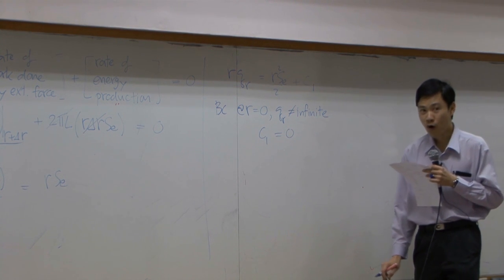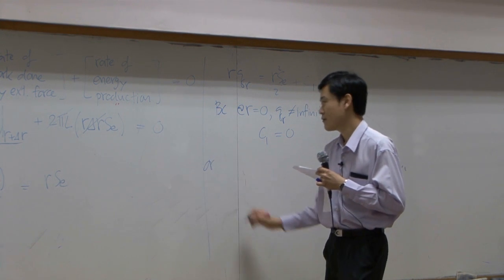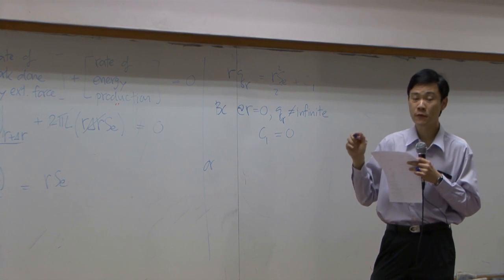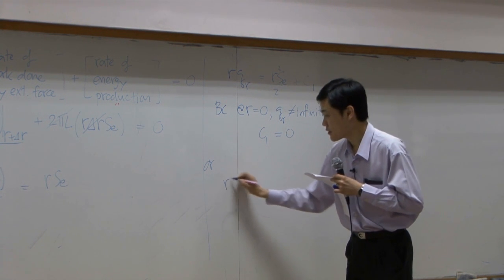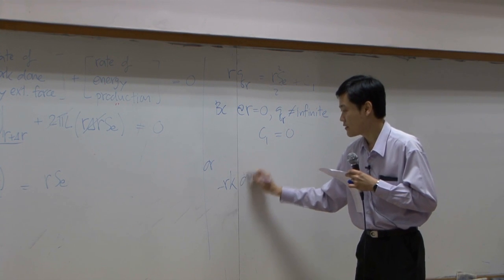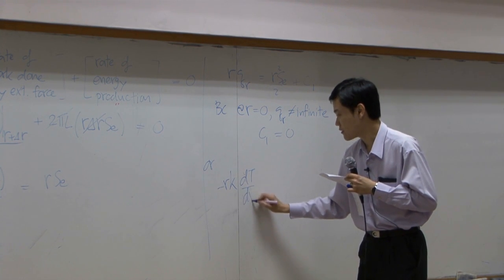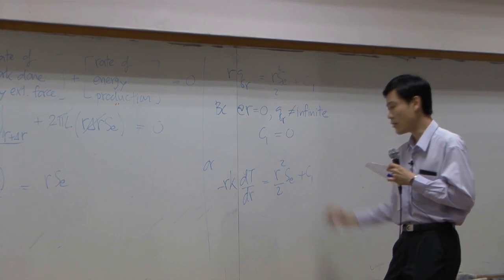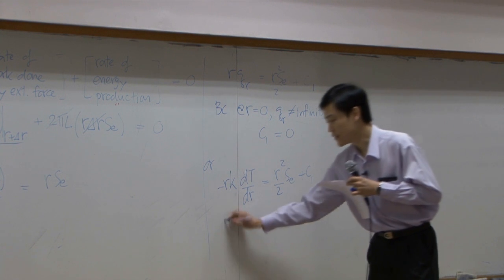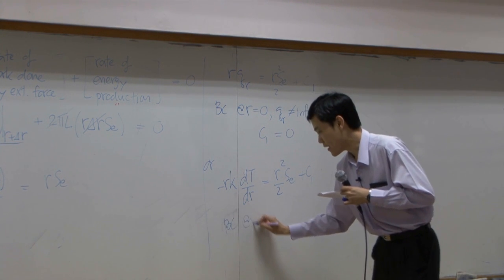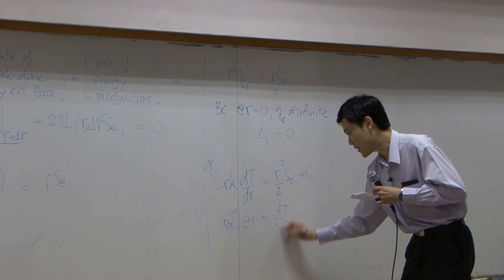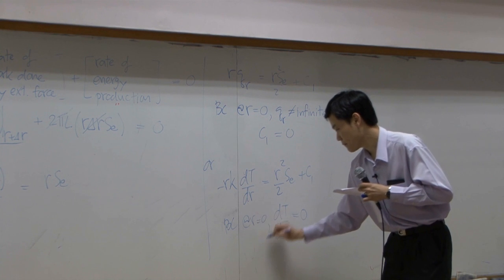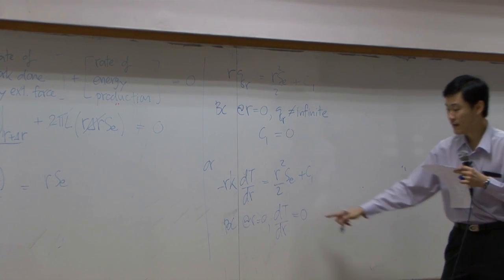Or, if you're confused, or you may convert this equation, use Fourier law, convert them into minus rk dt by dr equal to r square over 2 sc plus C1. And then, you can use boundary condition at r equal to zero, dt by dr, supposed to be zero.